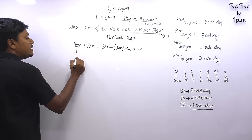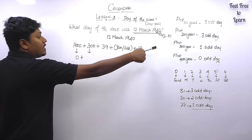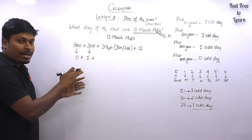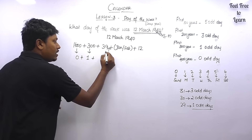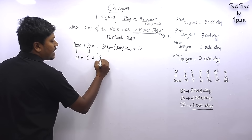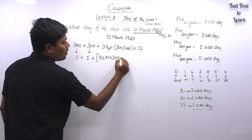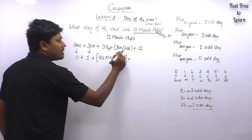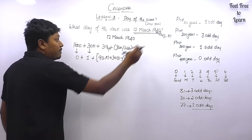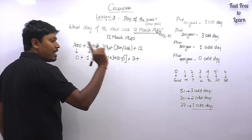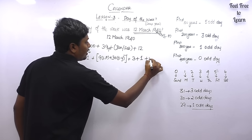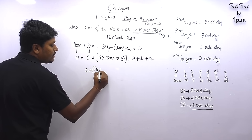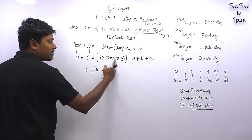For 1600 years we have 0 odd days. For 300 years we have 1 odd day. For the 39 years, divide by 4 to find leap years: 9 × 4 = 36, so we have 9 leap years and 30 ordinary years. January has 31 days giving 3 odd days. February in a leap year has 29 days giving 1 odd day. Every leap year has 2 odd days, so 9 × 2 = 18. Every ordinary year has 1 odd day, so 30 × 1 = 30.